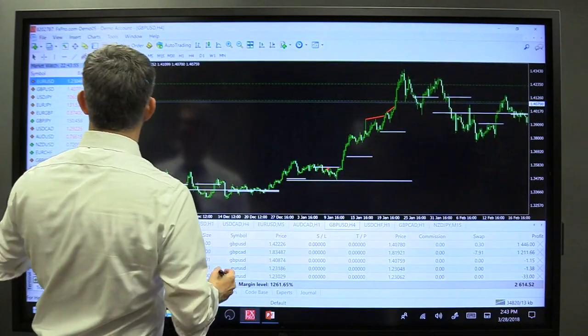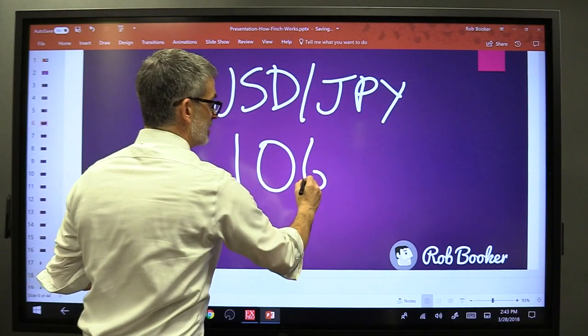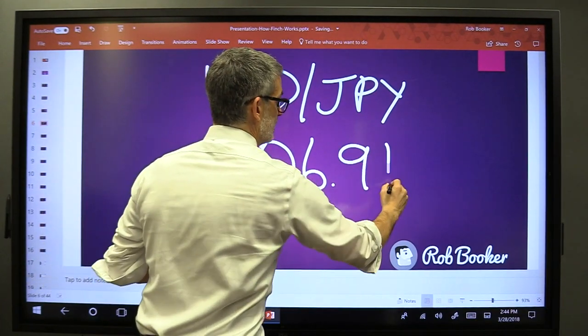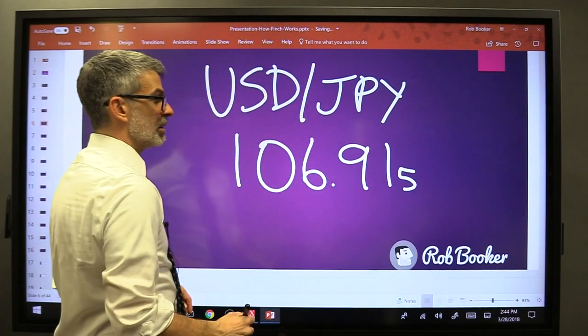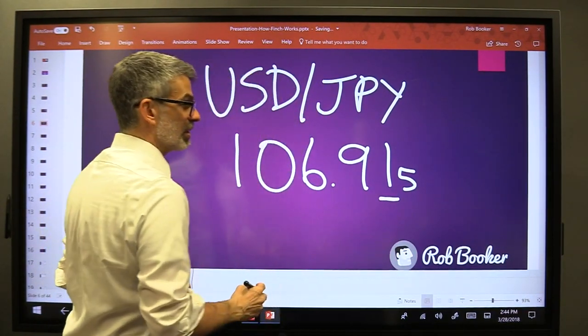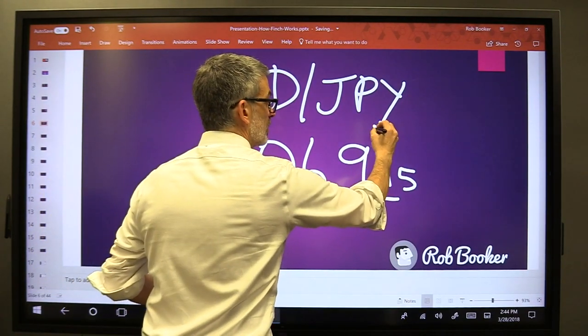This quote is going to have a different set of numbers. For example, right now I'll just look and see what the quote is, 106.91. So here we go, 106.91 is the quote, and there will be a small number here. The second number after the decimal place, in this case the one, is the pip.